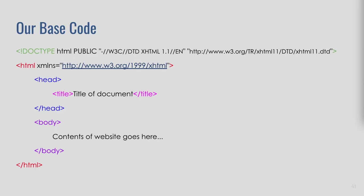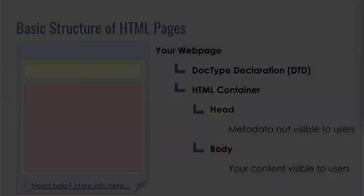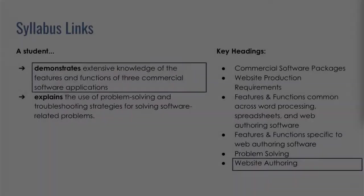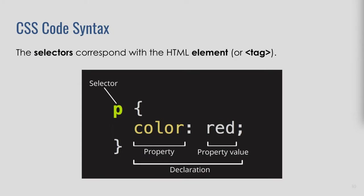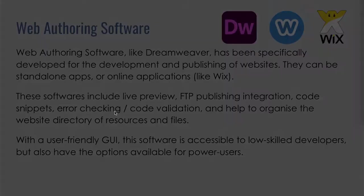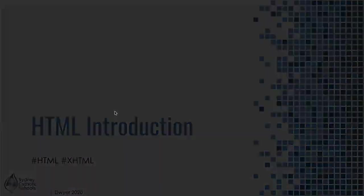Looking at line one in green, that's the DOCTYPE. The angled bracket is what we call a tag, or sometimes a declaration. Just like the P element or tag we looked at in CSS, the DOCTYPE declaration is also an element or a tag.